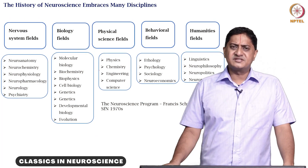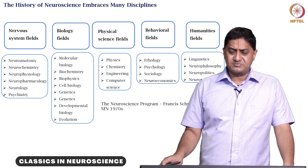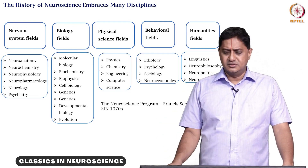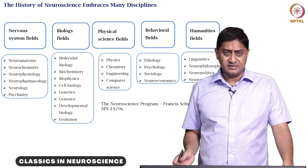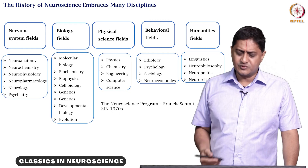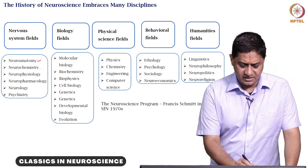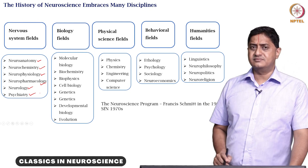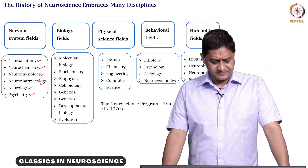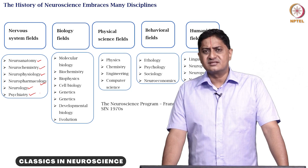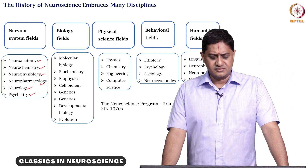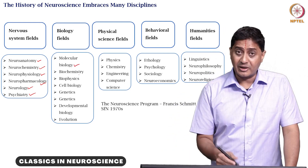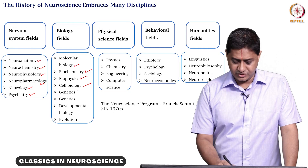The history of neuroscience embraces many disciplines — from physical sciences such as physics and chemistry, to biological sciences such as microbiology and biochemistry, to behavioral sciences and humanities. Within the neuroscience field itself, there is neuroanatomy, neurochemistry, neurophysiology, neuropharmacology, neurology, and psychiatry. These form various subfields within medicine. Then within biology, there is molecular biology, biochemistry, biophysics, cell biology, and genetics.